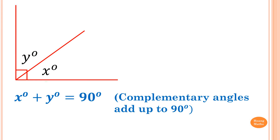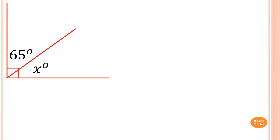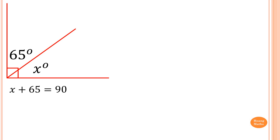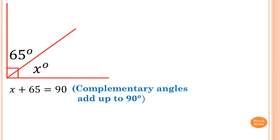For example, we have 65 degrees and x. We know that this is a complementary angle, so x plus 65 is equal to 90. Note that because this is x degrees and 65 degrees, we just write x plus 65 because we need to find x. So x plus 65 is equal to 90, and the reason is: complementary angles add up to 90 degrees.